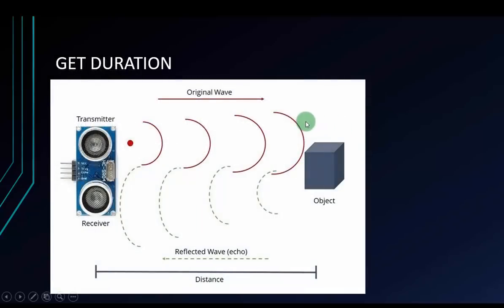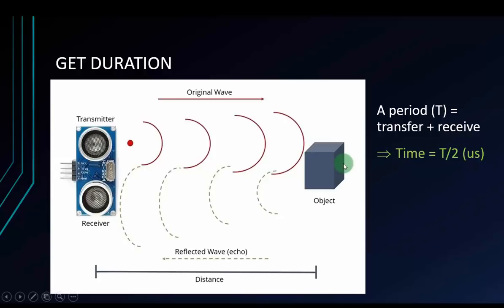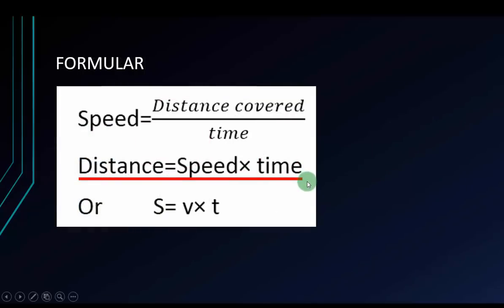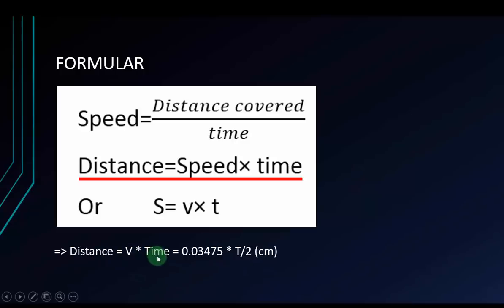The second step is to get the duration — that's the time. The transmitter will transfer and receive in one total period T. Since the signal travels to the object and back, to calculate the distance between the module and the object we only need half that time. So we divide T by 2. Using the basic physics formula, distance equals speed multiplied by time: distance = 0.03475 × (T / 2). The result is in centimeters.